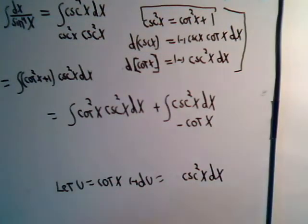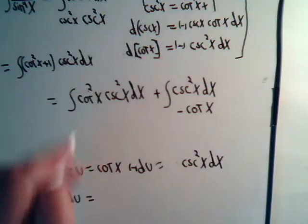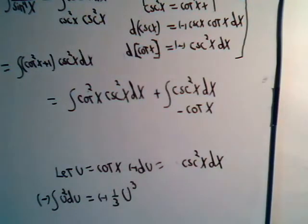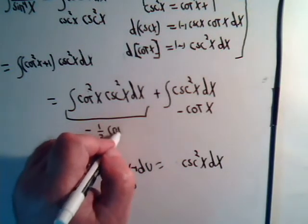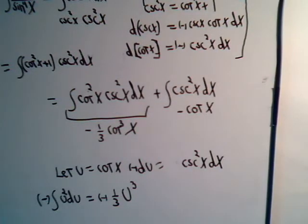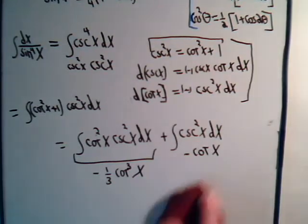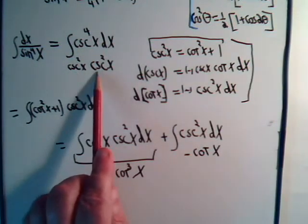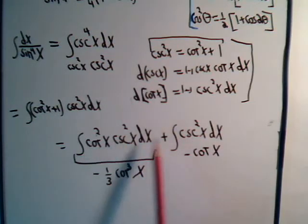So the first integral becomes the integral of u squared du with a minus sign out front. That gives minus one-third u cubed. Since u is cotangent of x, this integral is minus one-third cotangent cubed of x. That should finish us off then. We had this integral, rewrote it using the identity to break it into these two expressions, and once we did that, both integrals were straightforward to handle.